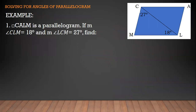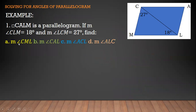Let's have an example. Given parallelogram CALM: if the measure of angle CLM is 18 degrees and the measure of angle LCM is 27 degrees, find: letter A — measure of angle CML, letter B — measure of angle CAL, letter C — measure of angle ACL, and letter D — measure of angle ALC.